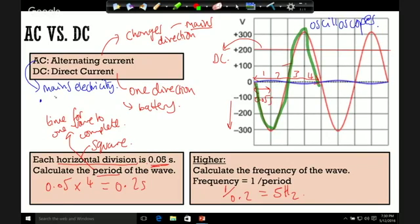The potential difference of this mains electricity is 230 volts. Really important that we remember that one, I'll tell you why later. And also the frequency is 50 hertz. So the mains electricity, the potential difference is 230 volts and the frequency is 50 hertz.